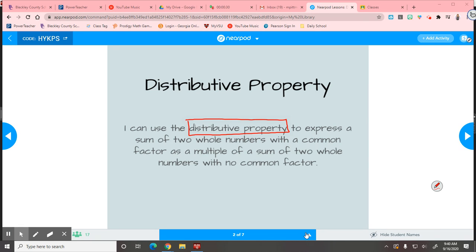Alright, so we're going to use the distributive property, meaning we're going to be passing out a number evenly, and we're going to express it as a sum. What does a sum mean? What operation gives a sum? Addition. So we're going to represent it as adding of two whole numbers with a common factor. So we've been talking about common factors with our GCF. Y'all, on your paper, you need to circle or underline the words Ms. Pittman is doing. Those are very important keywords.